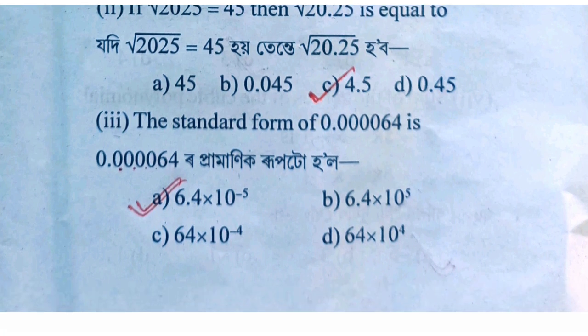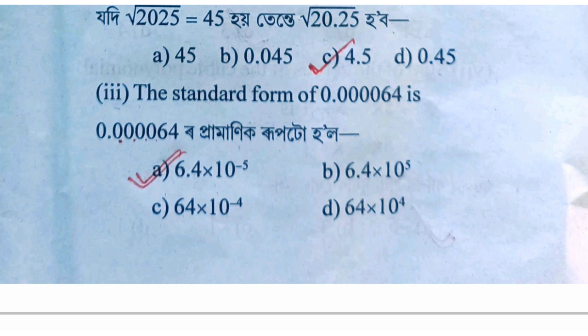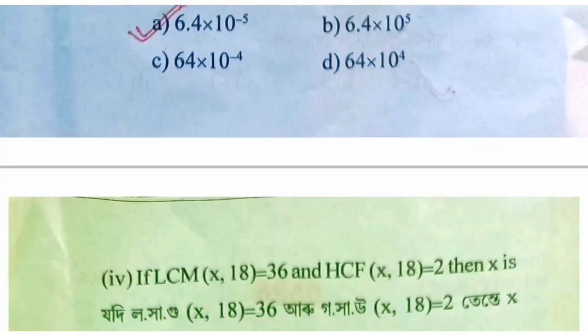The standard form of 0.000064. The standard form of 0.000064 — in the last step, the standard form of 0.000064 is equal to 6.4 x 10 to the power of minus 5.